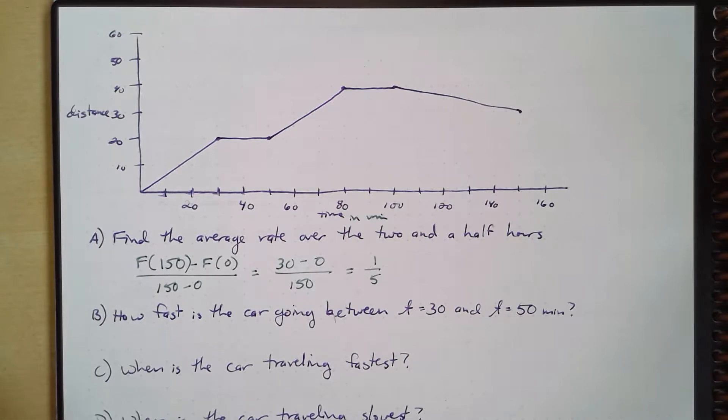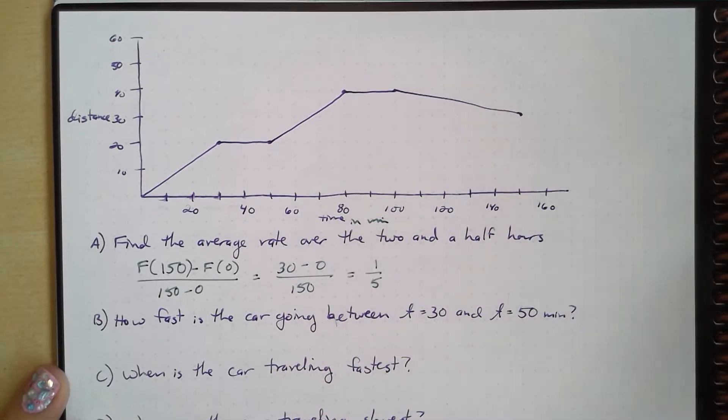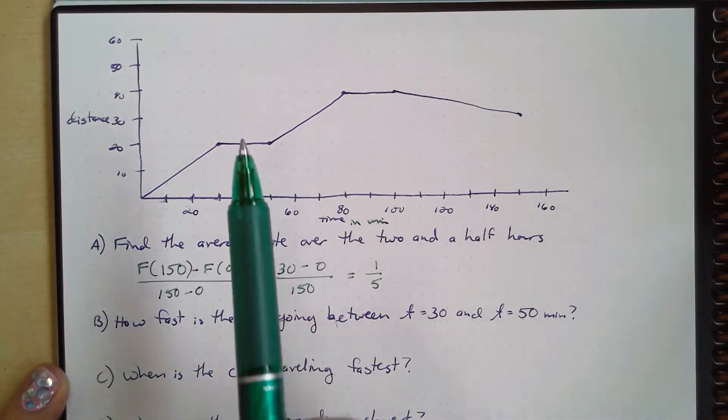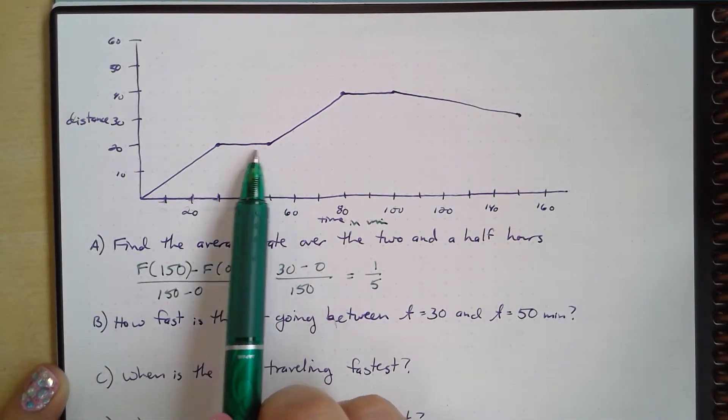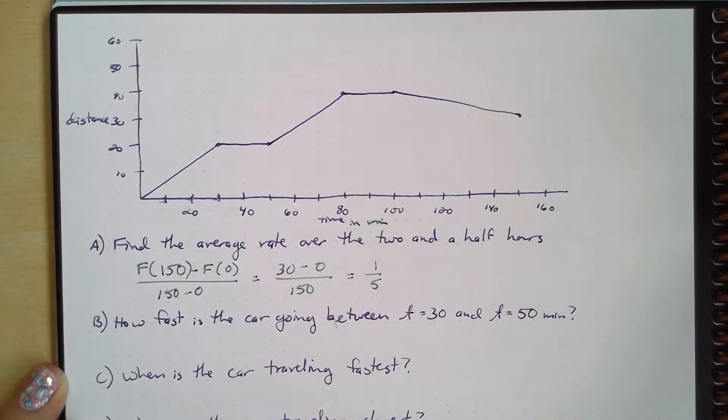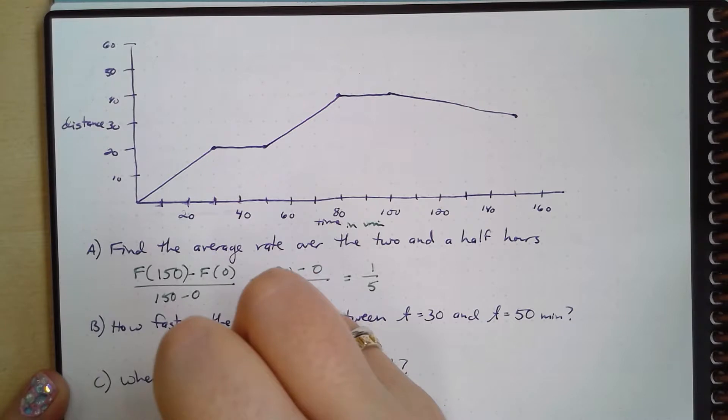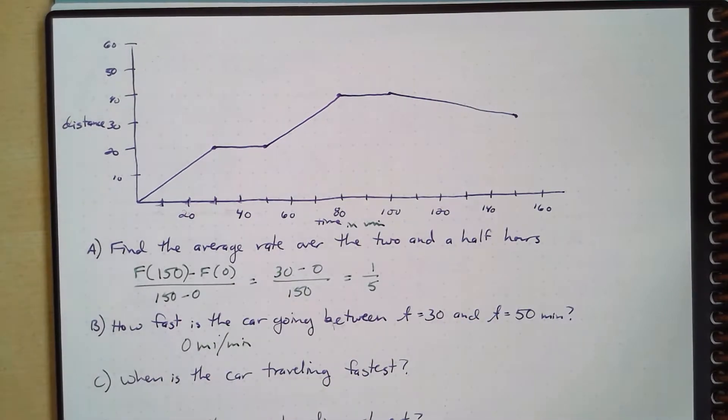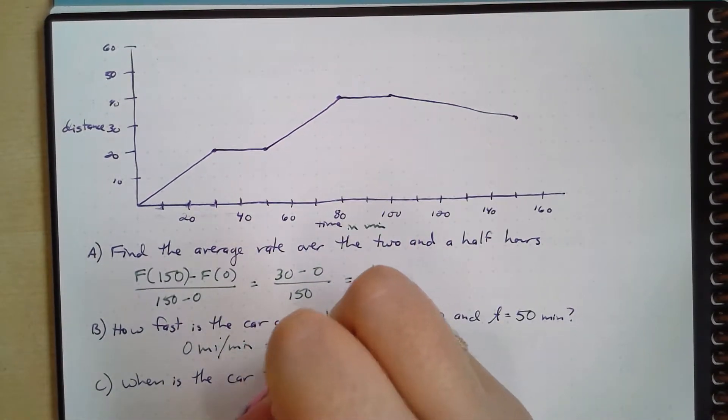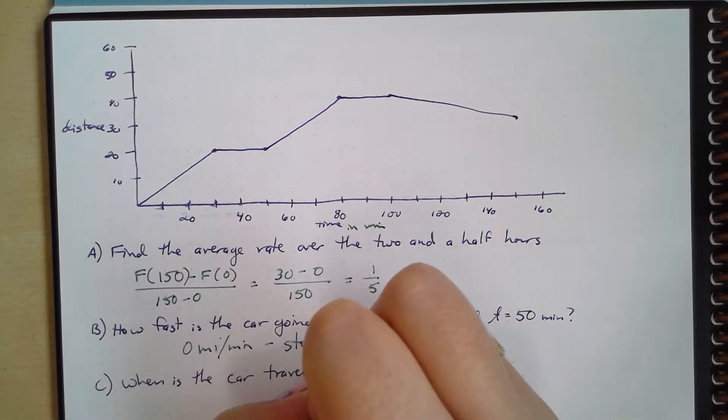Well, how fast is the car going between t equals 30 and t equals 50 minutes? And if I look at my graph here, I can see between 30 and 50, actually nothing is happening, right? It's going zero miles per minute. If it's going zero miles per minute, it's just stopped, right? It wasn't moving at all.